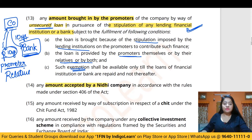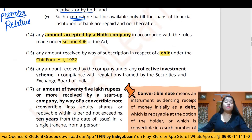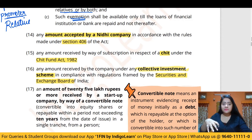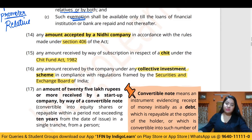Amounts received by a Nidhi company under Section 406, amounts received by a chit fund company under the Chit Funds Act 1982, and amounts received under a collective investment scheme regulated by SEBI will also not be considered deposits. These are excluded because they are already governed by their own respective regulations — SEBI regulations in the case of collective investment schemes — so Sections 73 to 76A will not apply.